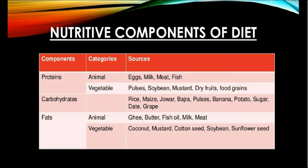Now we will study about the sources of protein. From the point of view of sources, protein can be divided into two categories: animal protein and vegetable protein. Proteins which we get from animal products are called animal protein. This protein is found in egg, milk, milk products, meat and fish. Egg is the best example of rich protein because sufficient amounts of amino acids are found in eggs.